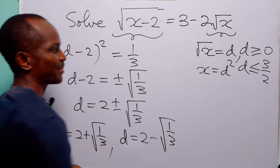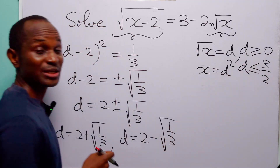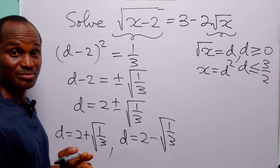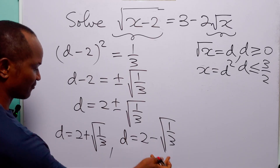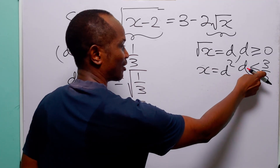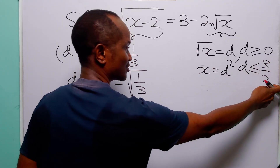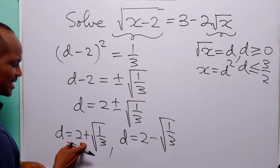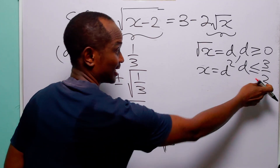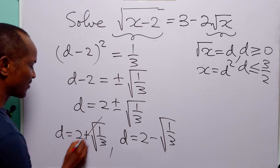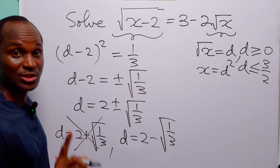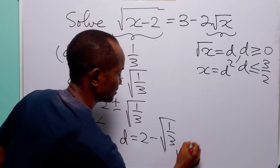But let us remember that d not only must be greater than or equal to 0 — that is, it must be positive — it must also be less than or equal to 3 over 2. When you look at d equals 2 plus the square root of 1 over 3, you will see that this is greater than 3 over 2. So this value of d is unacceptable. The value of d that we are going to accept is d equals 2 minus the square root of 1 over 3.